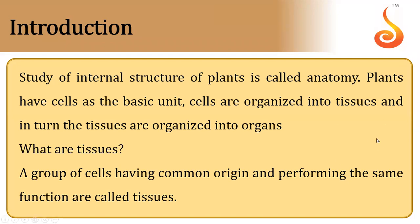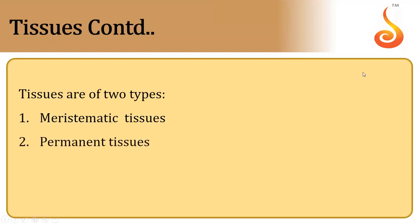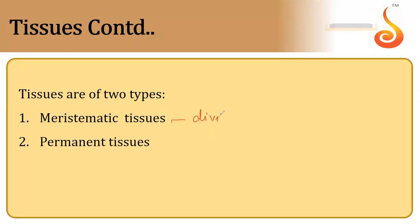In plants we classify these tissues into two types: meristematic tissues and permanent tissues. Meristematic tissues are those which are actively dividing cells. Their main function is to divide and increase the number of cells so that new permanent cells could be added. They also help in replacing lost parts of the plant.